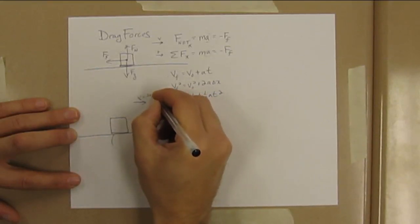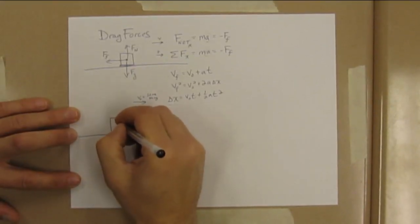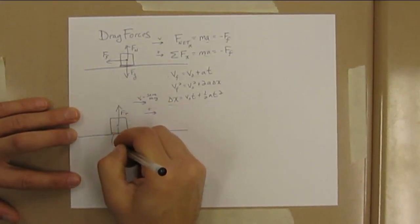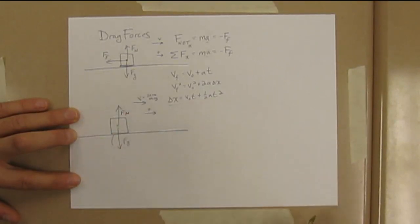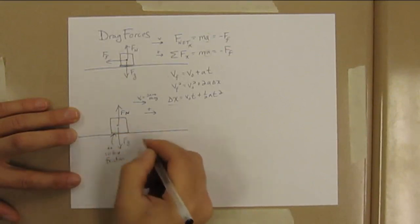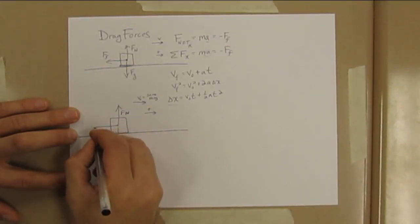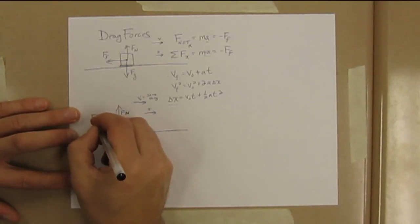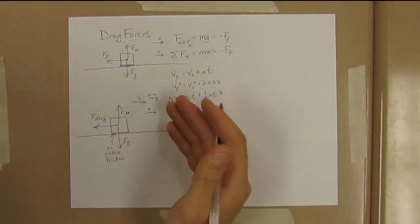Again, it's got the normal force up and an equal weight down—force of gravity down. I'm going to say there's no surface friction between the surfaces, but there still is some drag force that we're going to call F_drag.